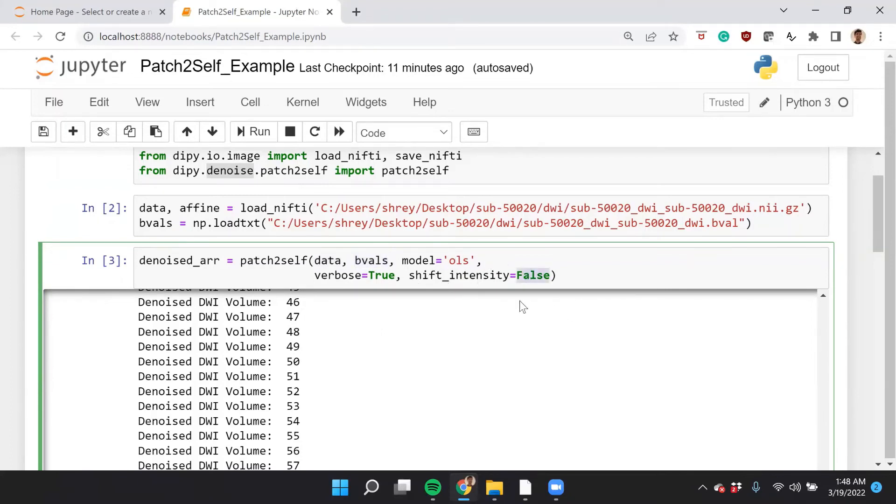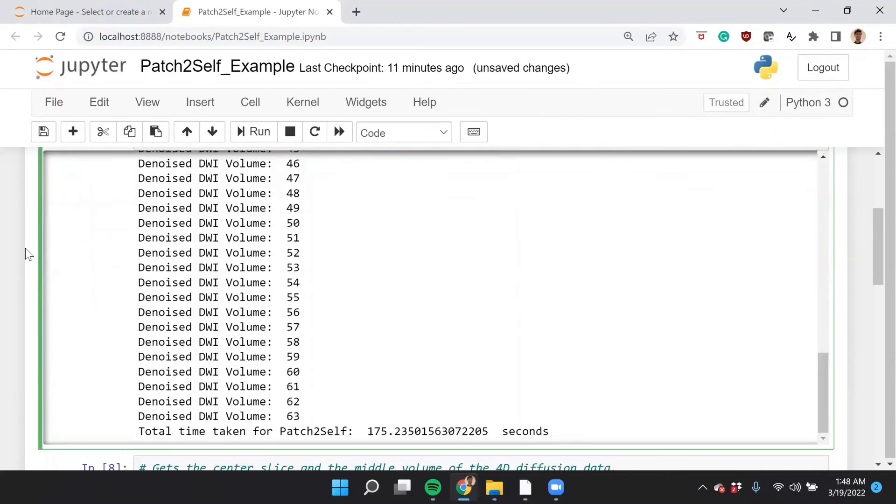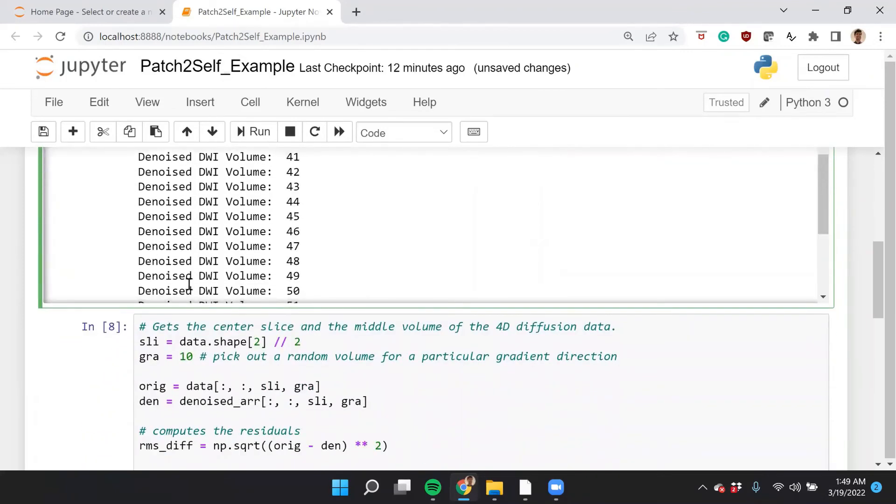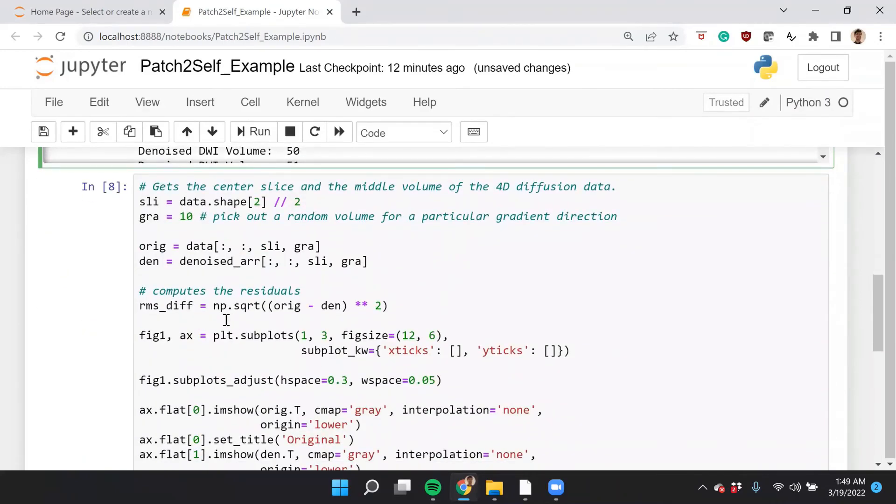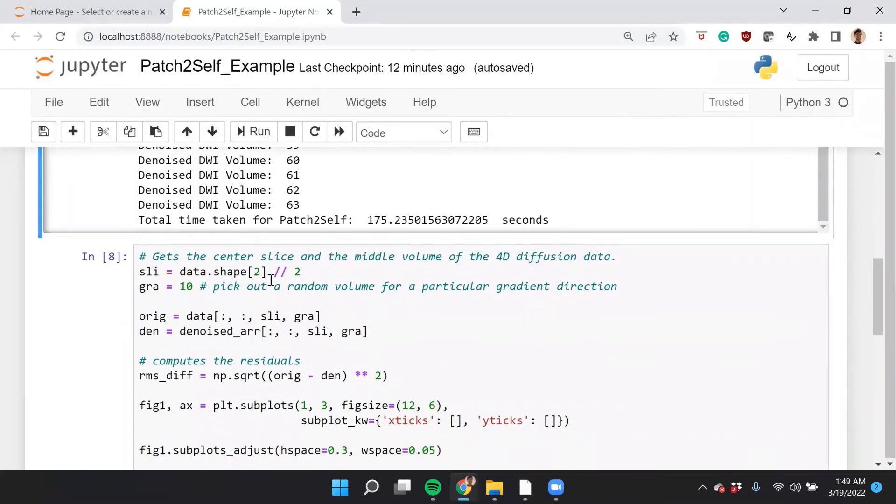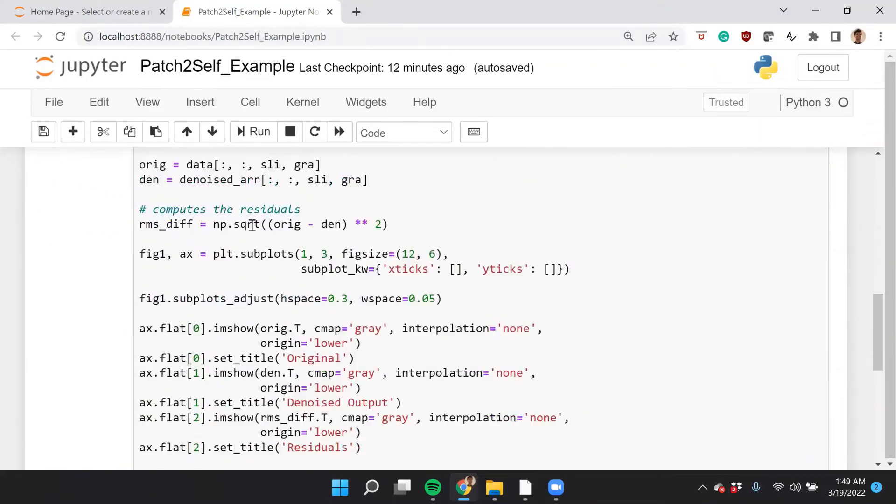Patch2Self, by default, requires only the data and the b-values as necessary inputs. All others are optional inputs. Whenever you're dealing with your own data, you want to set the shift intensity to true. This is just a necessary precaution. If you set the verbose flag to true, it will print an output, something like this, which essentially shows a progress of how the volumes are being denoised. If you have only one b-zero, then you skip denoising the b-zeros. But if you have more than one, then Patch2Self will denoise b-zeros also. Next, it also at the end shows the time, if you're interested.